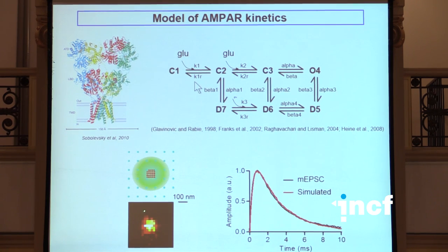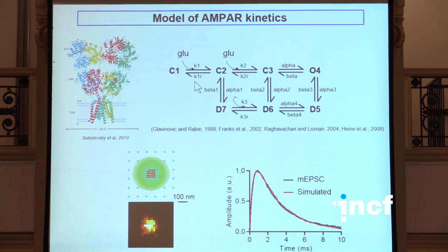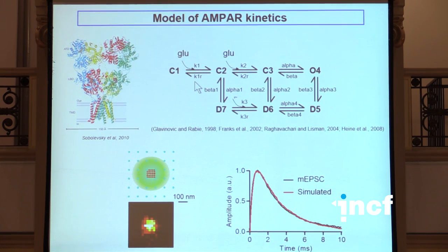The first thing we found, which was actually already published by Lisman and Raghavachari 10 years ago, is that because those receptors have a pretty low affinity for glutamate - in the order of several hundreds of micromolar - the overall area over which receptors are activated is actually pretty small. And you see the full width at half maximum of the Gaussian where receptors are activated is around something like 100 nanometers. And we think that's very important because then it really means that depending on whether you release your glutamate vesicle right on top of a cluster or next to a cluster is going to make a very important difference in the post synaptic response.